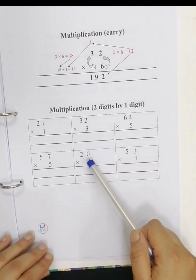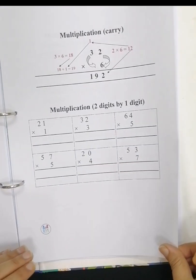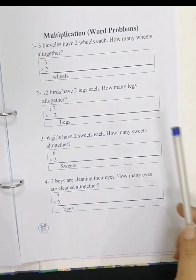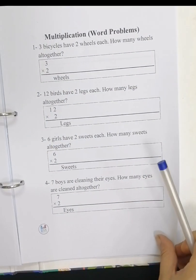Carry sum and two digits by one digit. Multiplication word problem.